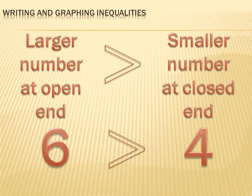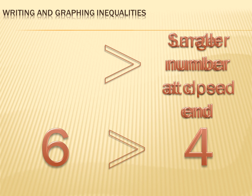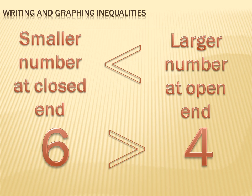For instance, 6 is larger than 4, and the 6 is at the larger side of the symbol. Now I can shift things around — I could put my larger number on the right and my smaller number on the left. But if I did that, I'd have to reverse my symbol, so that the smaller side of the symbol was towards the smaller number and the larger side of the symbol was towards the larger number.